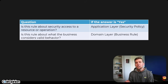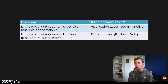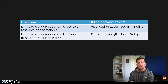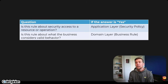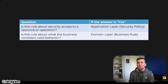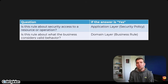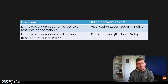Another guideline: is this rule about security access to a resource or operation? If yes, then application layer — it's a security policy. Is the rule about what the business considers valid behavior? If yes, then inside your domain layer — it's a business rule.